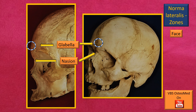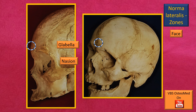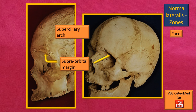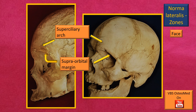A central elevation, the glabella, is visible, and below that is the junction of two sutures — the nasion — which is actually the junction point between the internasal and frontonasal sutures, and is an important landmark. The lateral extensions of the glabella, when extended laterally, form the superciliary arch. Below it is the supraorbital margin, indicated by the non-flashing arrows.